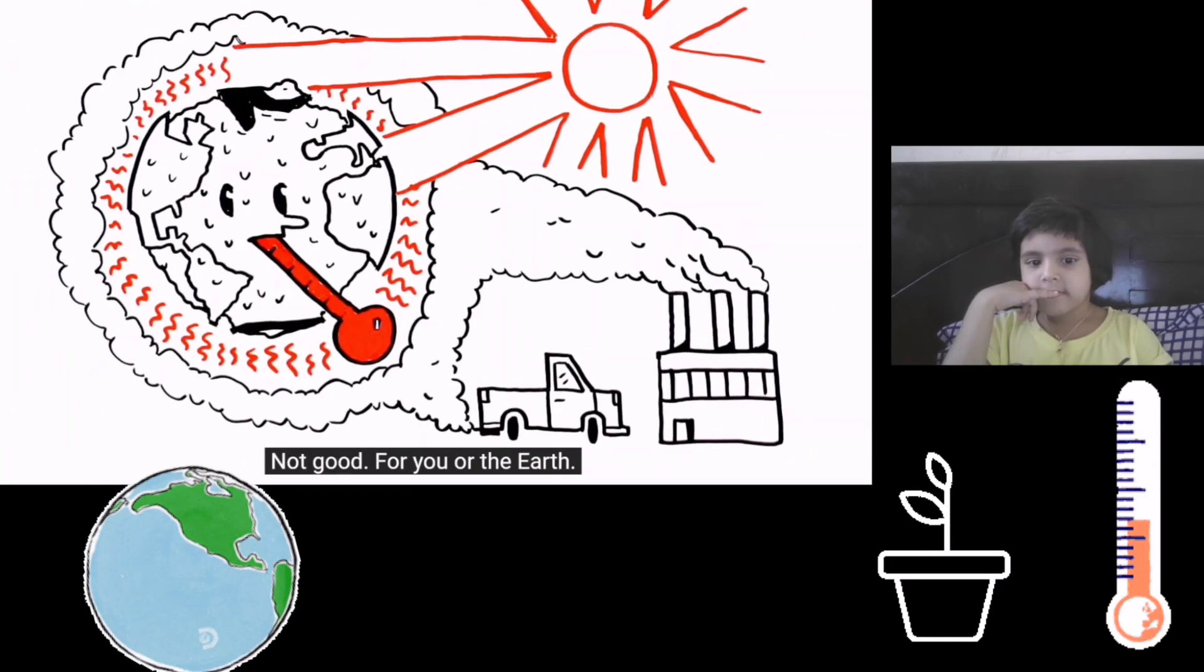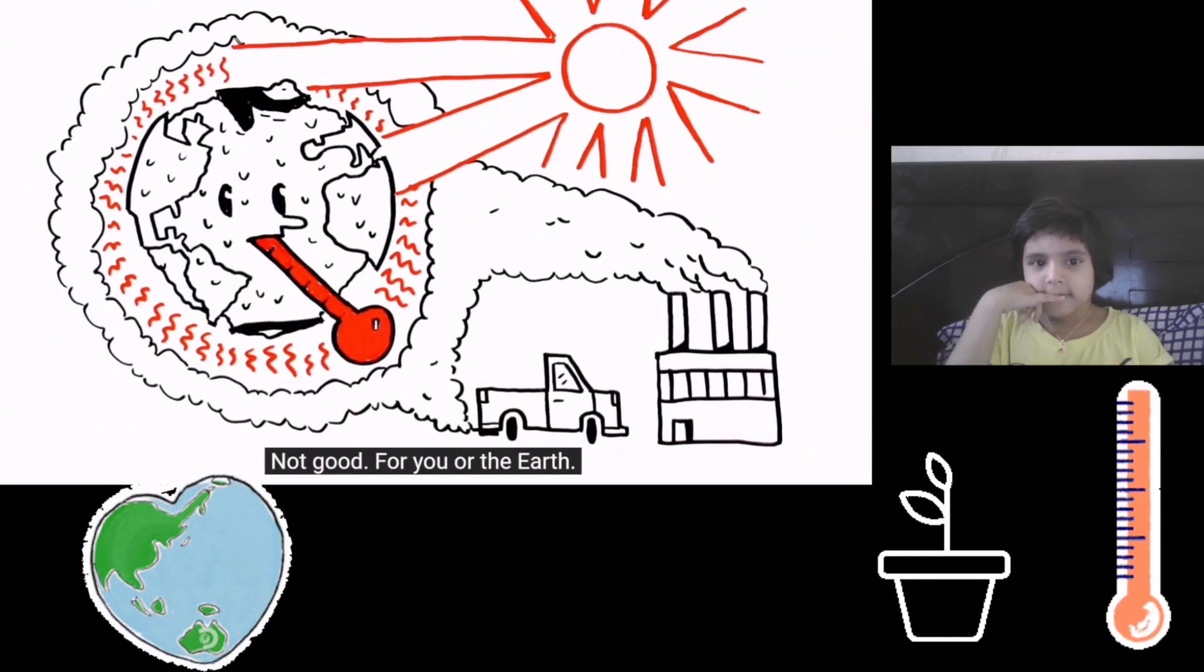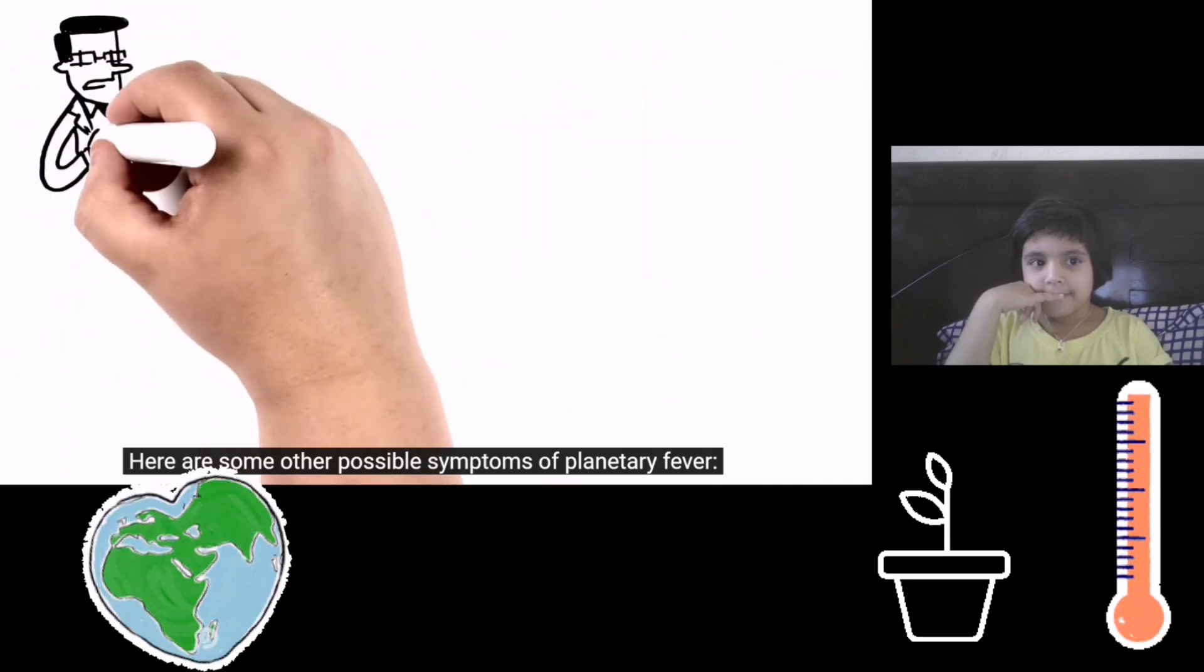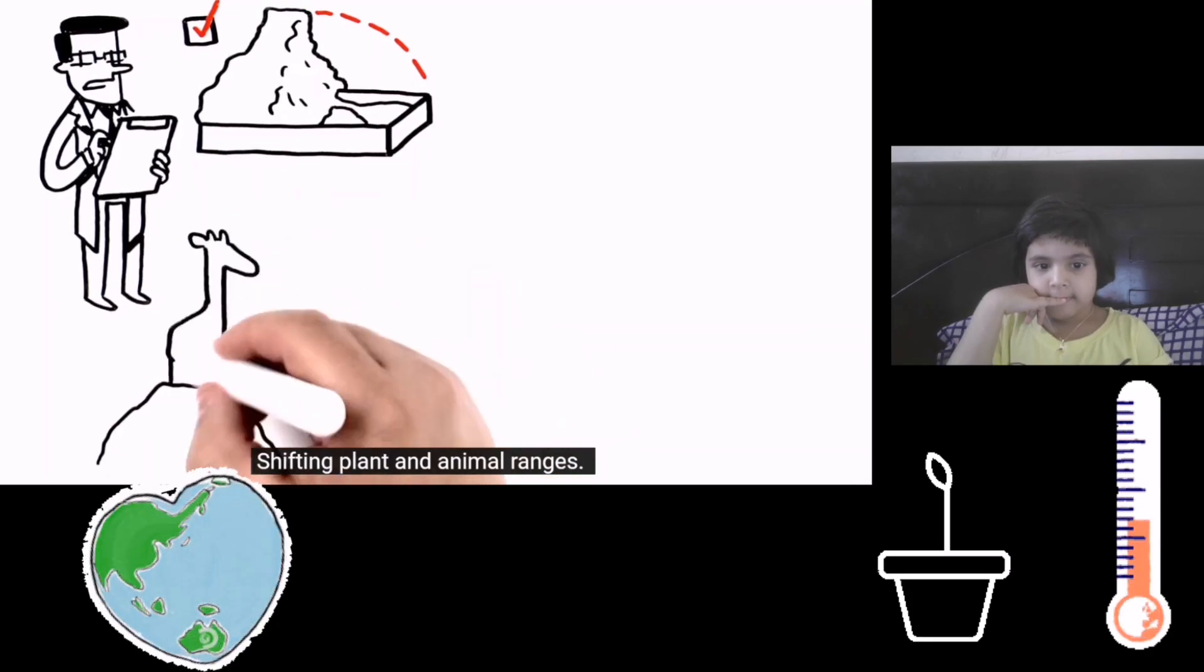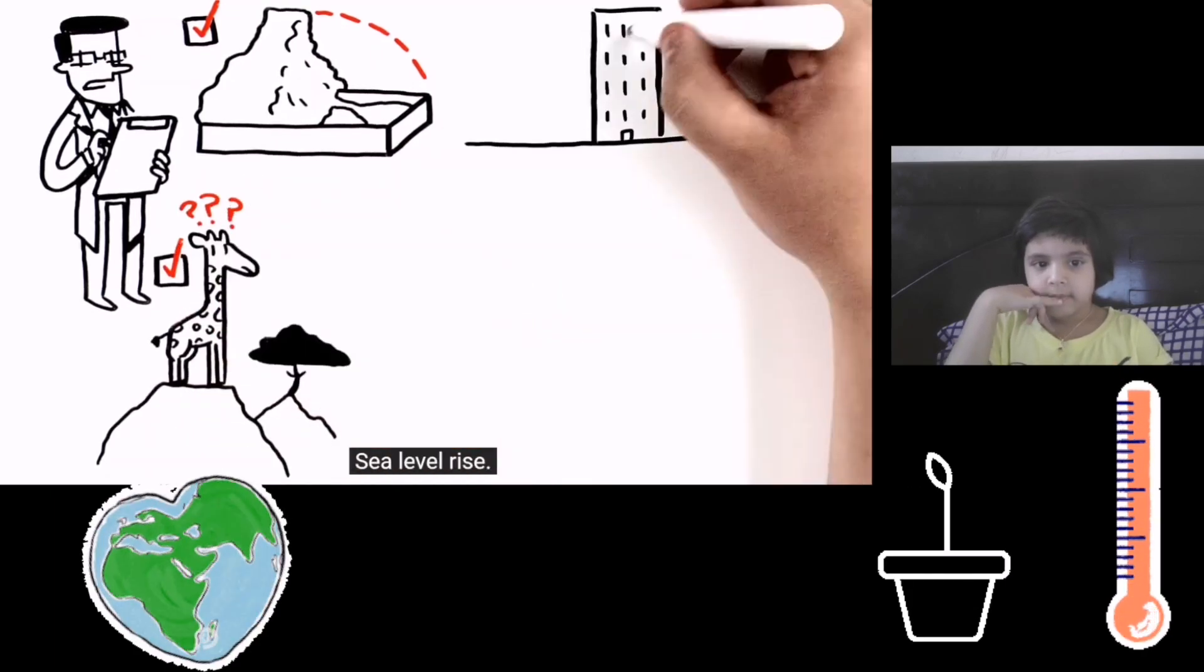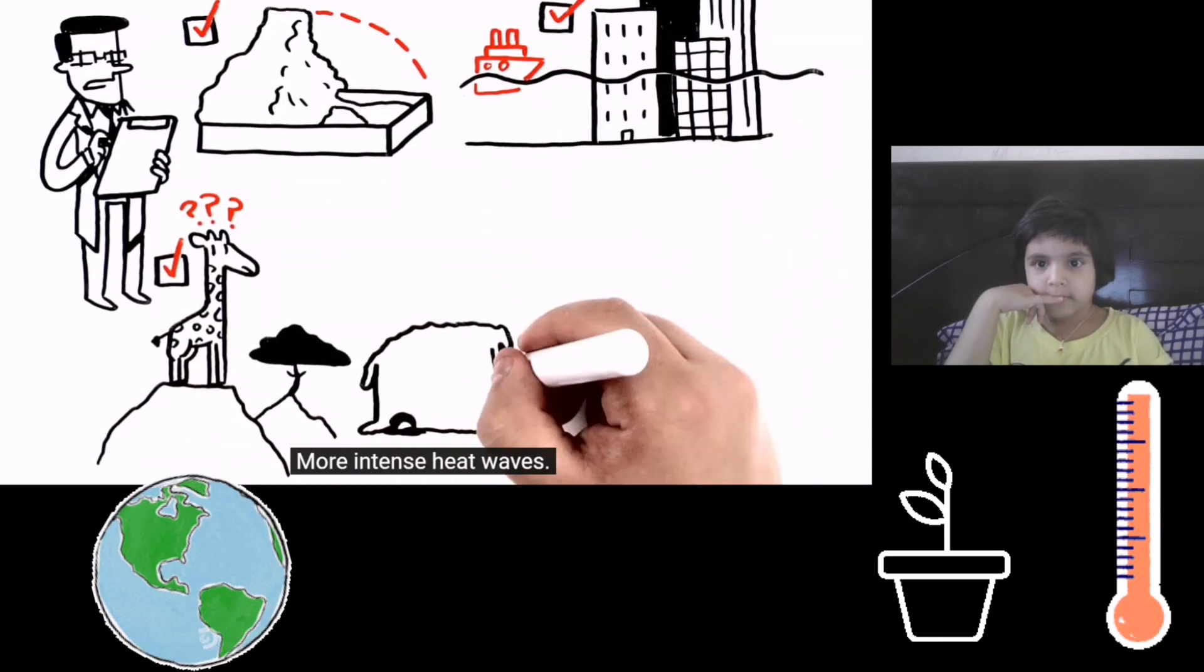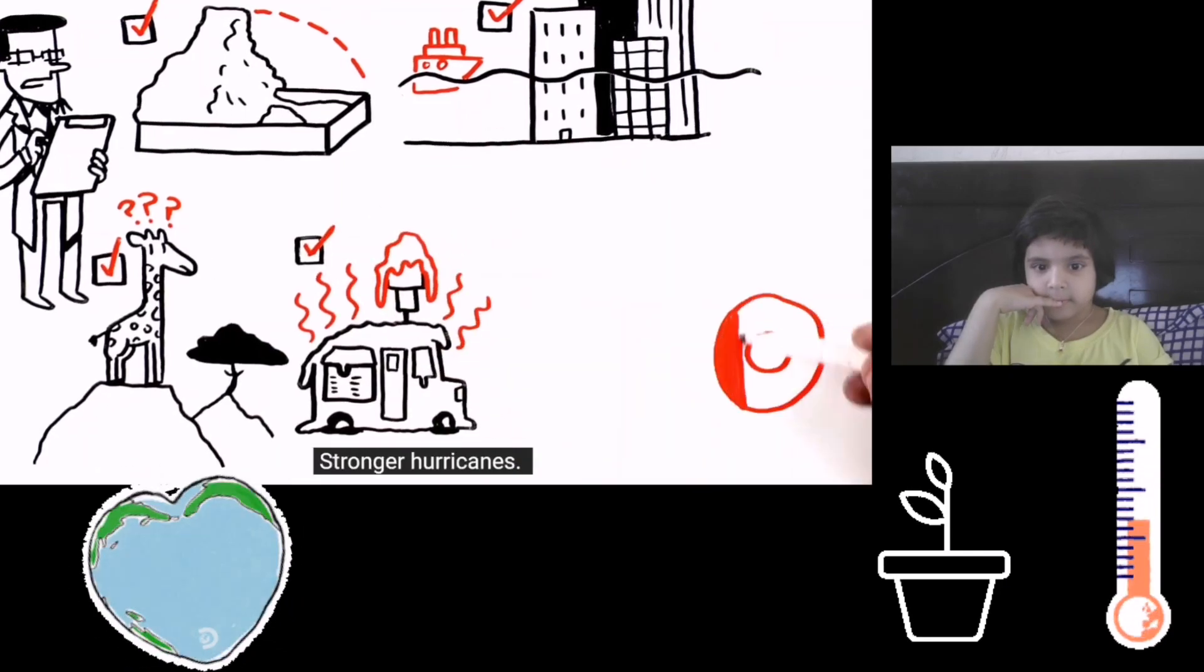Not good for you or the Earth. Here are some other possible symptoms of planetary fever. Shrinking glaciers. Shifting plant and animal ranges. Sea level rise. More intense heat waves. Stronger hurricanes.